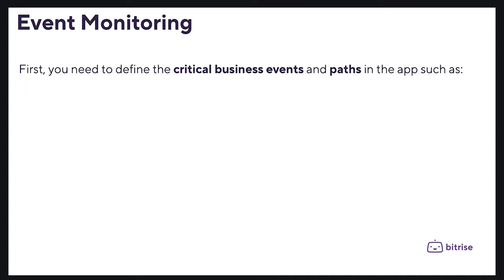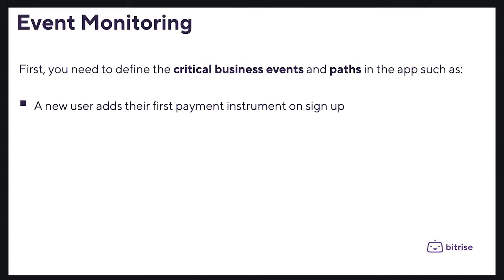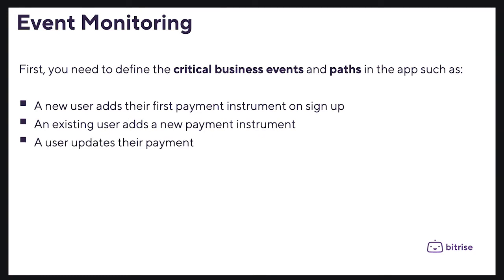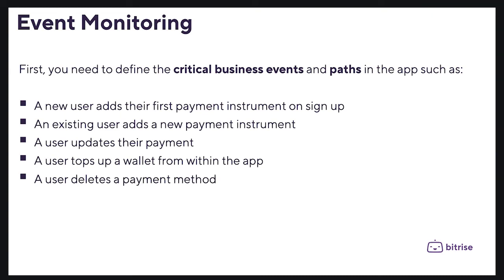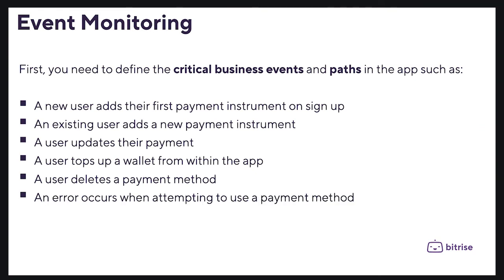For example, in event monitoring you first need to define the critical business events and paths in the app. For a payment feature, we can trace: a new user adds their first payment, an existing user adds a new payment, a user updates their payment, a user tops up a wallet from within the app, a user deletes a payment method, and an error occurs when attempting to use a payment method. We can also implement cross-platform monitoring for these events.